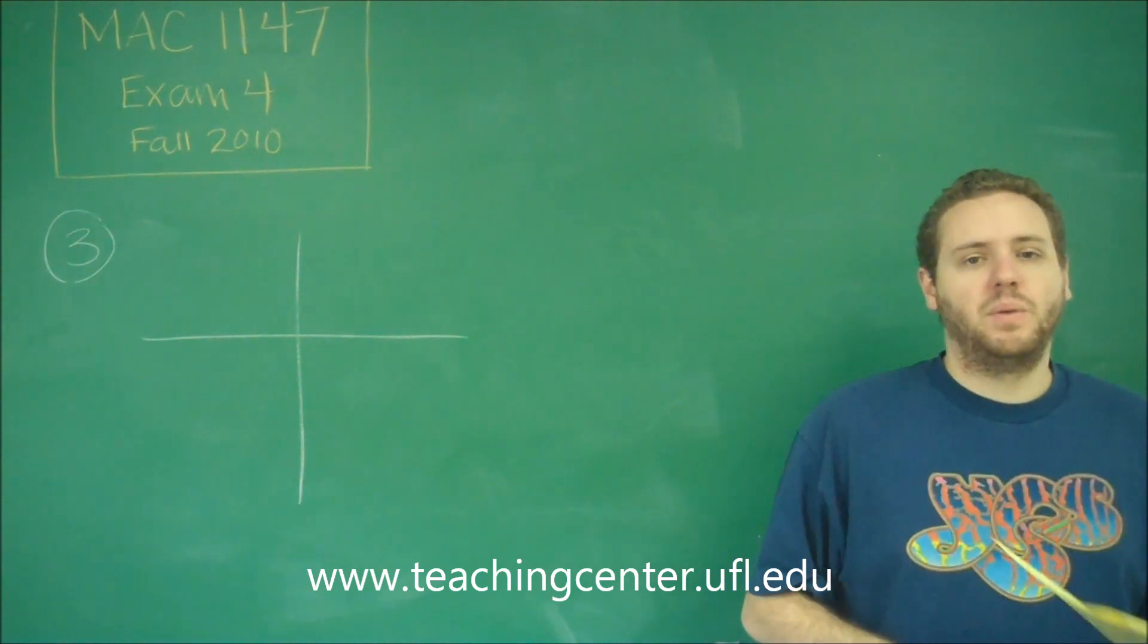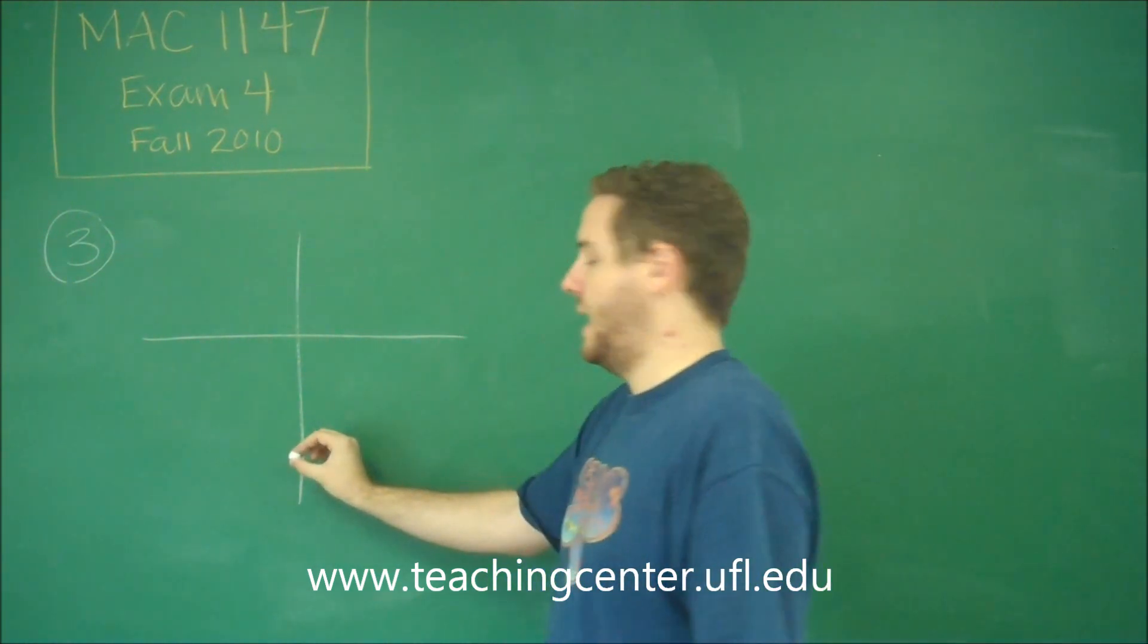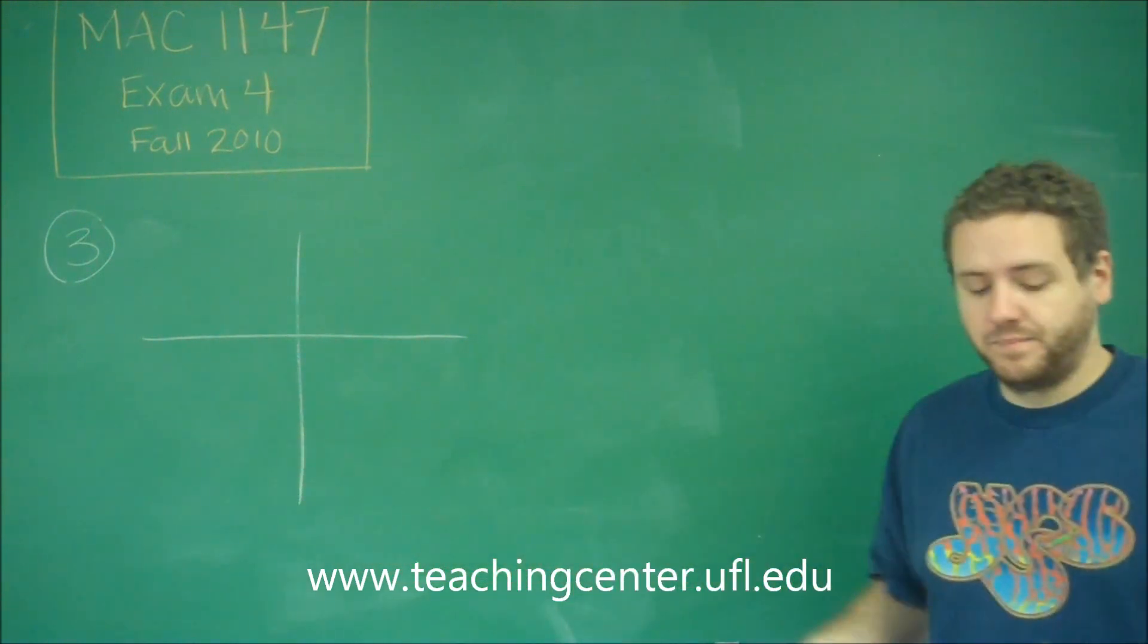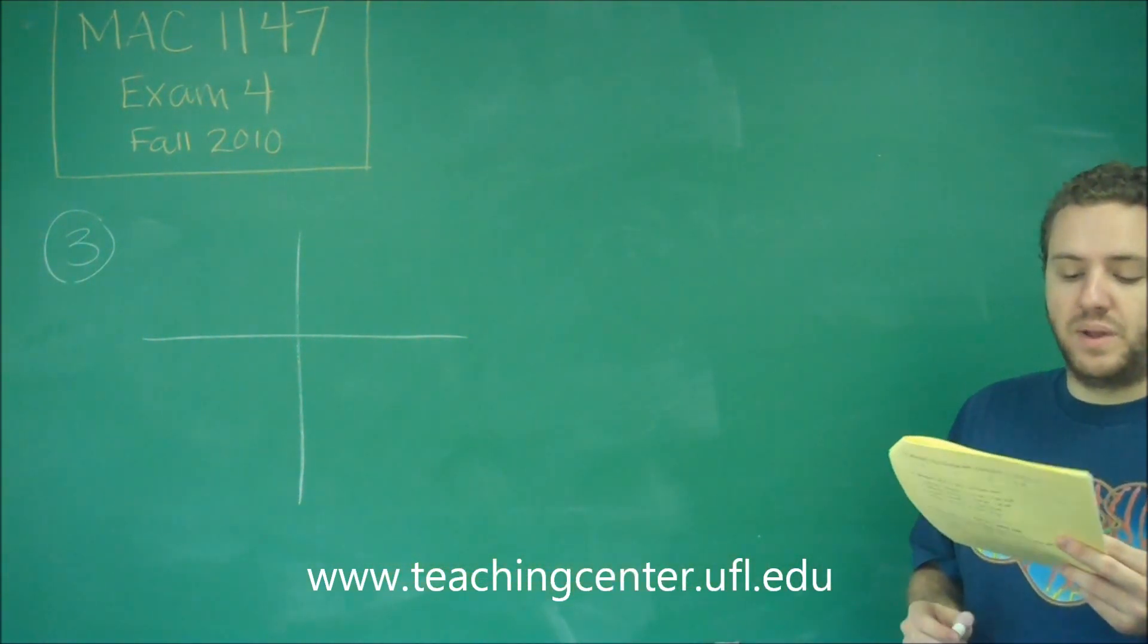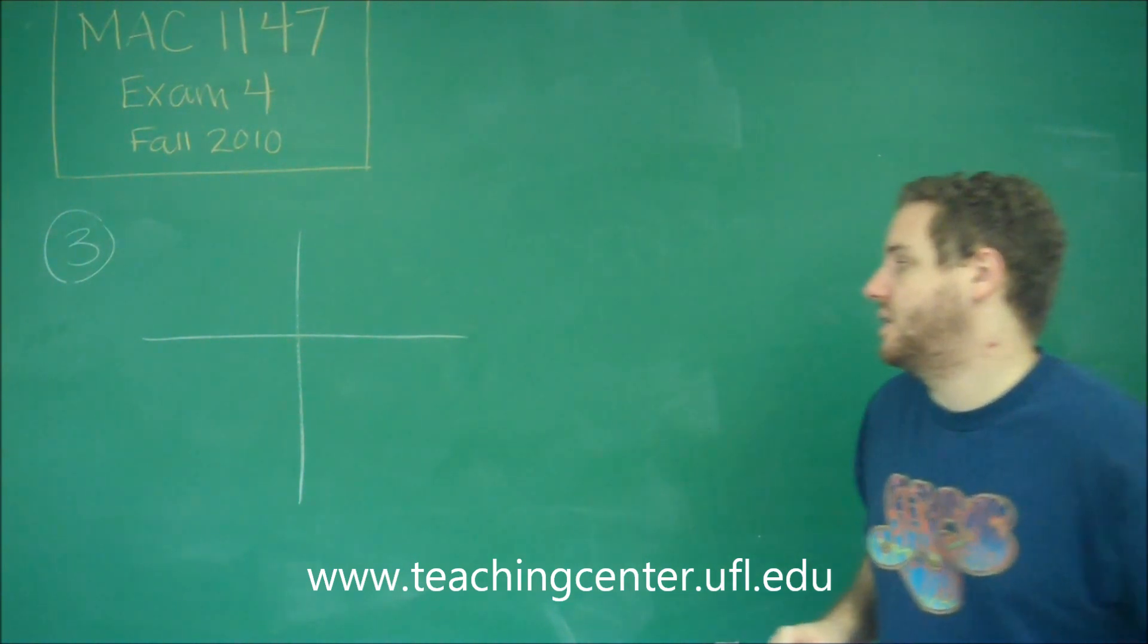So our theta is negative 3 pi over 5. Remember that when you have a negative angle, you're starting from 0 and going down instead of up. And we have negative 3 pi over 5. So 3 pi over 5, all you need to think about is...